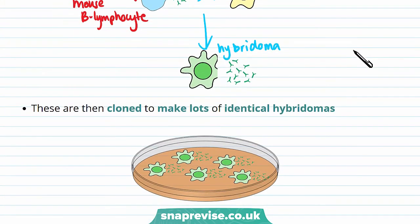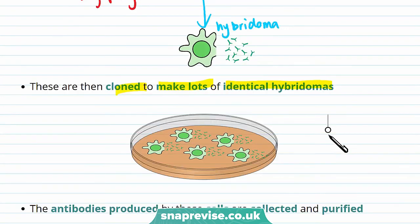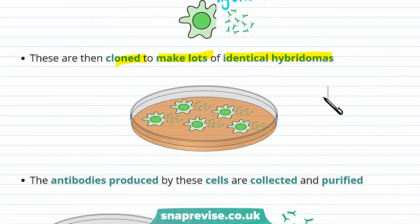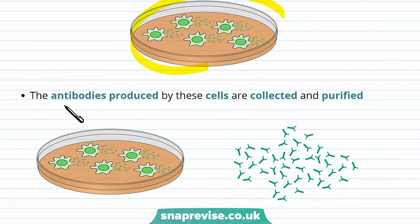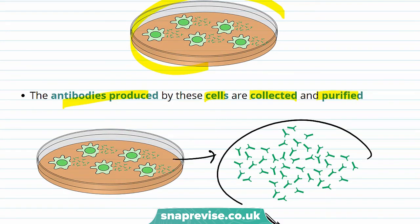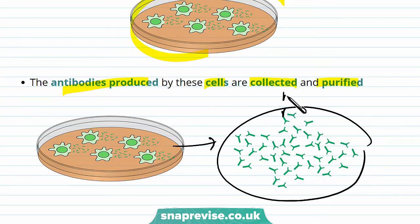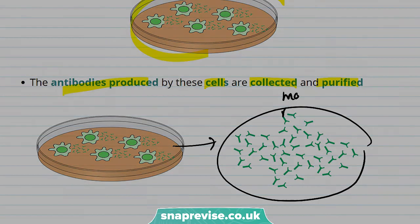These hybridomas are then cloned to make lots of identical hybridomas — you can see a lot of them growing on this agar dish. The antibodies produced by these cells are then collected and purified. So that's how you mass produce monoclonal antibodies.